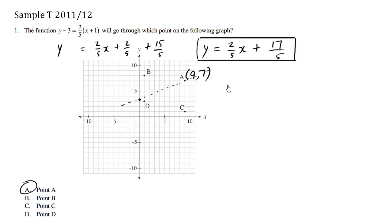So the y value is 7. 7, does it equal 2 fifths, the x value being 9, plus 17 over 5? So does 7 equal 2 times 9 is 18, 18 fifths, plus 17 fifths. So what we have here is 17 plus 18, which is 35, 35 over 5. And then 35 divided by 5 is 7.